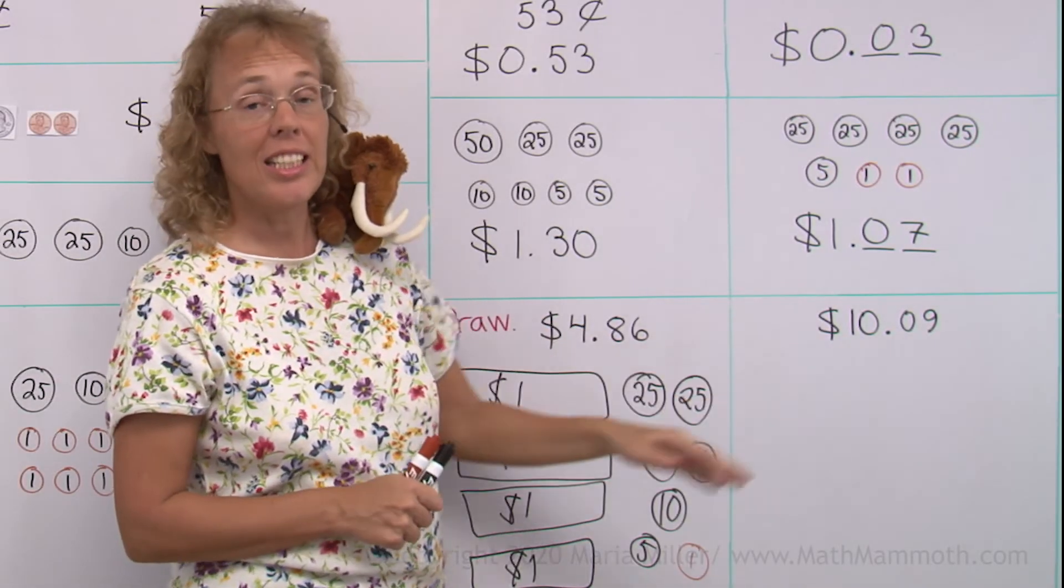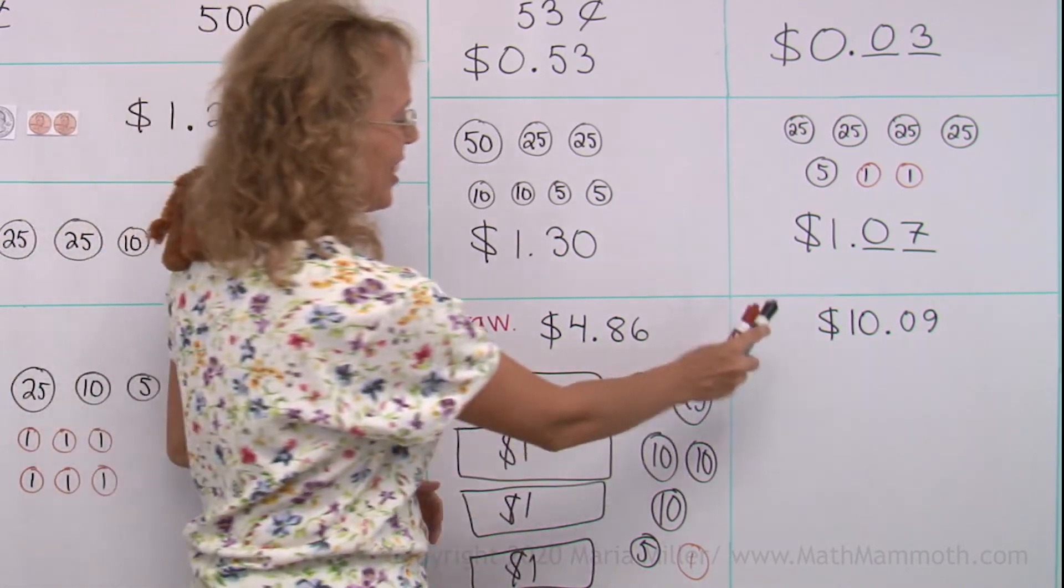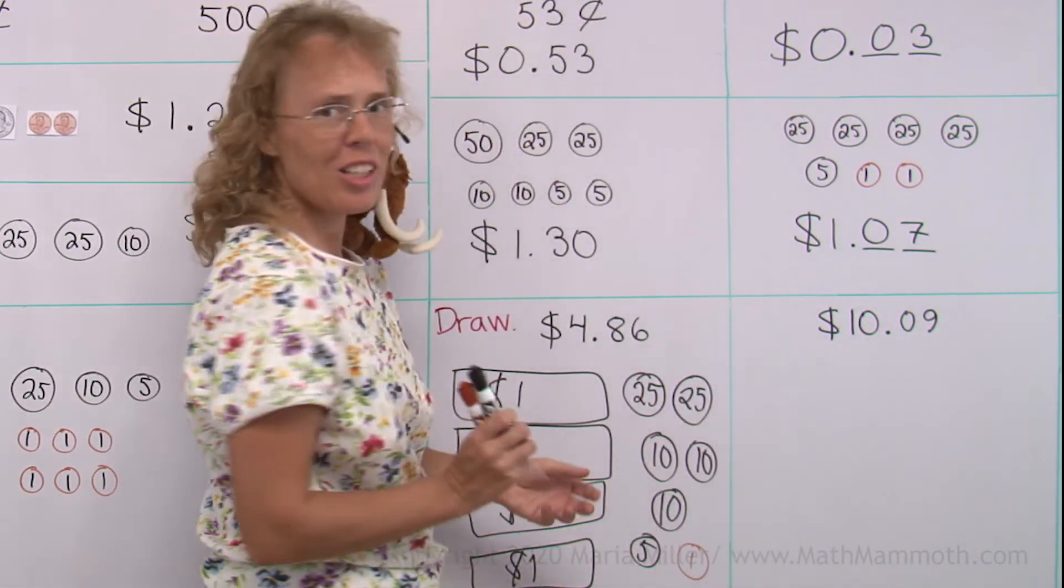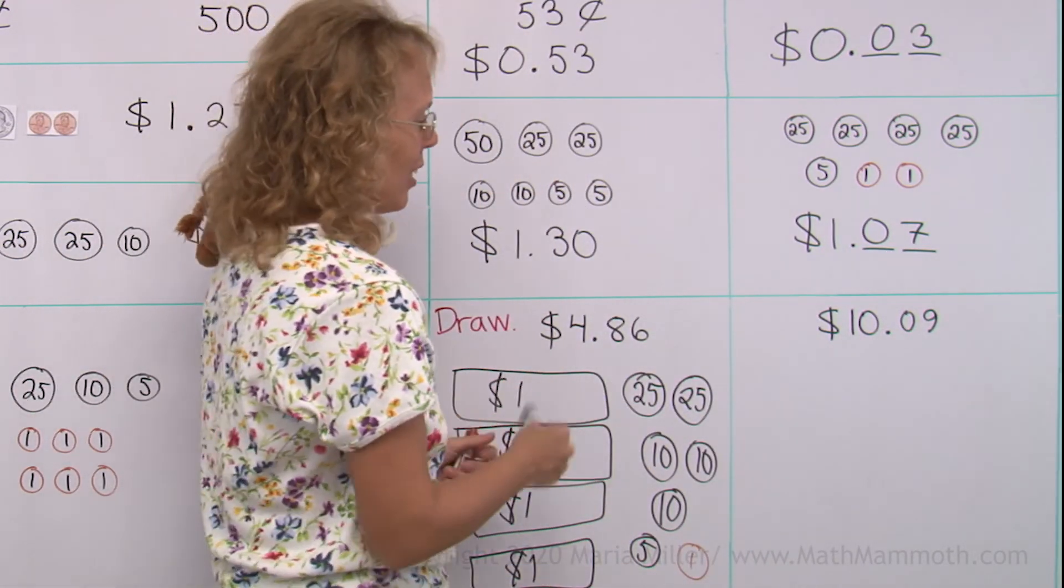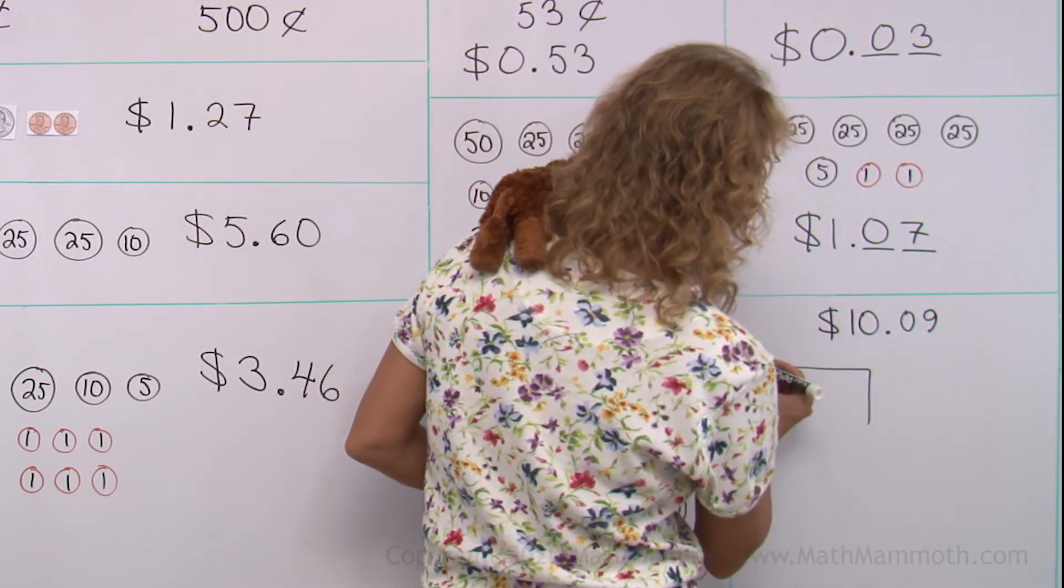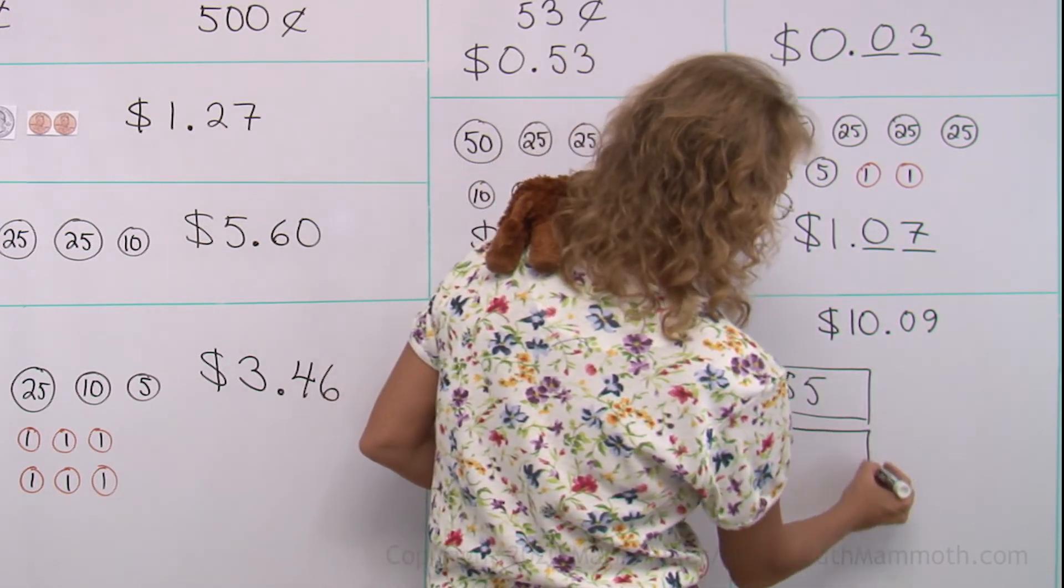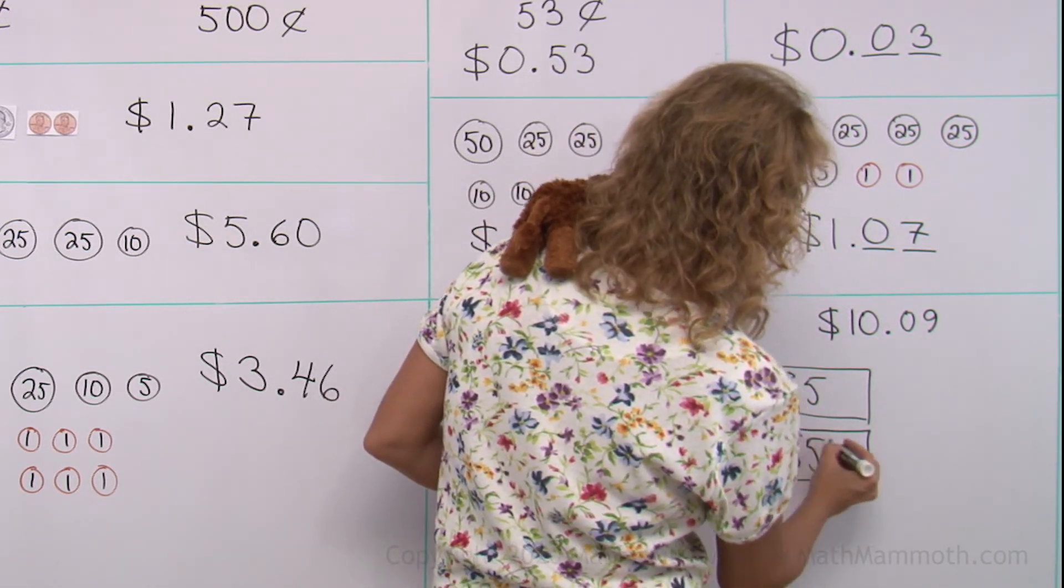10 dollars, nine cents. And no, Matthew, we don't need to draw 10 one dollar bills, though we could. That's a quicker way. We can use a five dollar bill, for example. Or we could use a 10 dollar bill, but let me use this now. 10 dollar bill, that's our 10 dollars. And then nine cents.